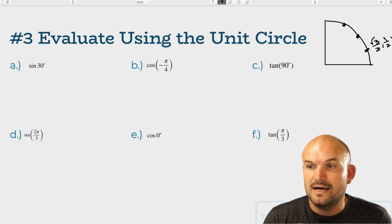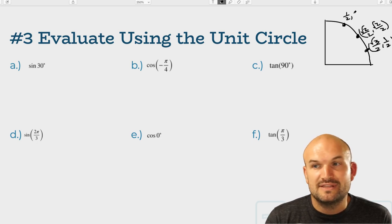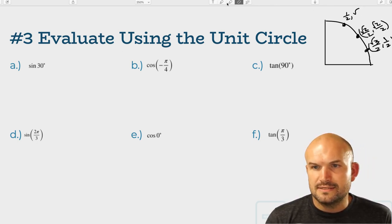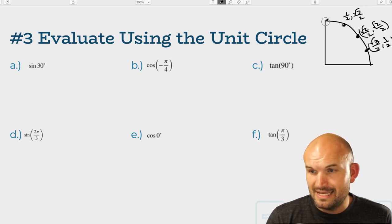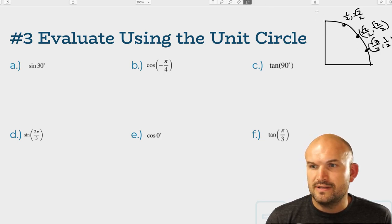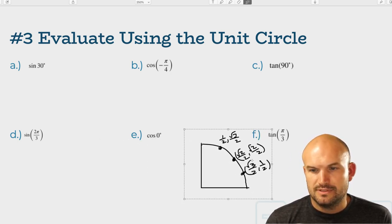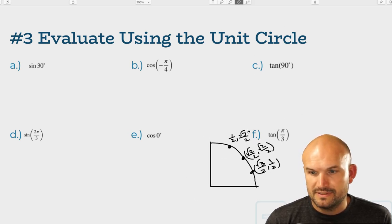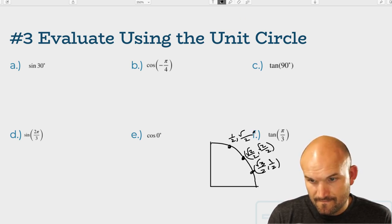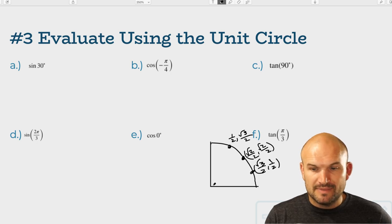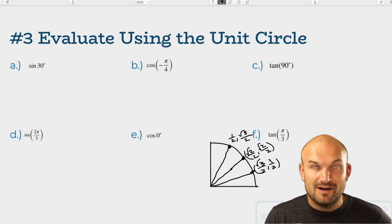For this video, I'll assume students have at least been introduced to the unit circle and know the first few points in the first quadrant. This is just the first quadrant of the unit circle. Remember, the unit circle has a radius of 1. These are three angles: 30 degrees, 45 degrees, and 60 degrees — also known as pi over 6, pi over 4, and pi over 3. We need to understand the difference between radians and degrees.